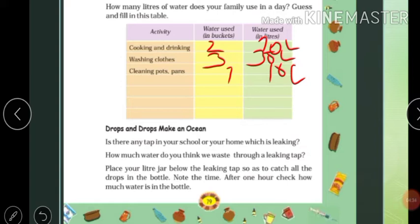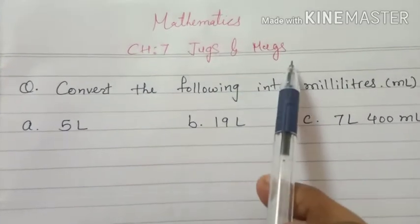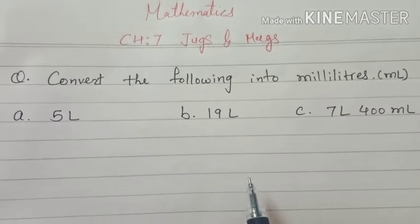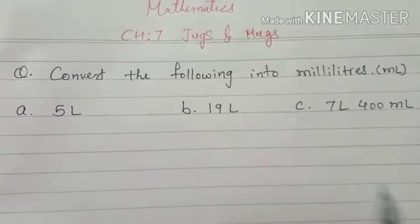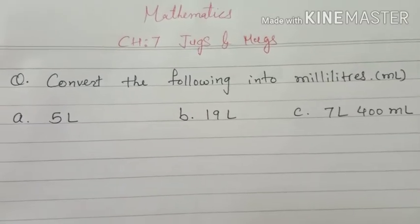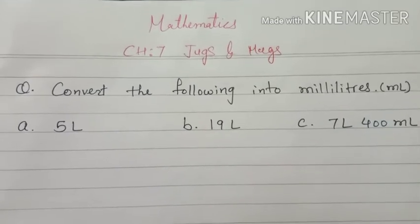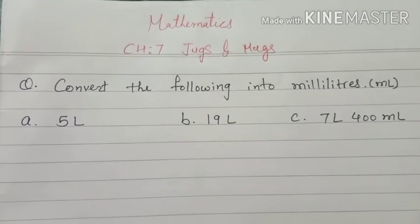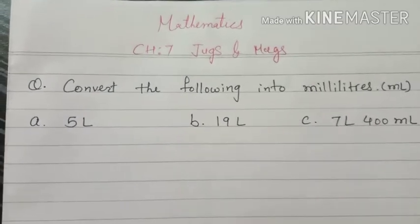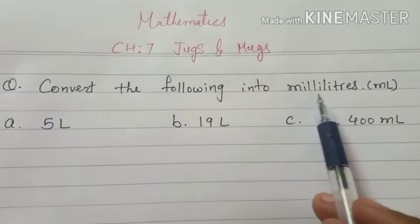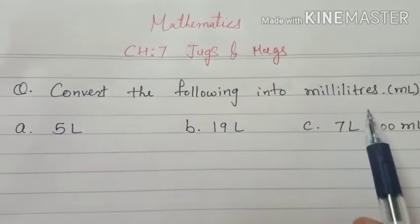So I hope you understand this properly. Now let's see some important exercises related to this chapter — Chapter 7, Jerks and Mugs. I am going to explain some notebook exercises which are related to and important for this chapter. The exercise is: Convert the following into milliliters. We already learned about conversions — gram to kilogram, kilogram to gram, meter to centimeter, centimeter to meter — and the same way, here the conversion of milliliter.